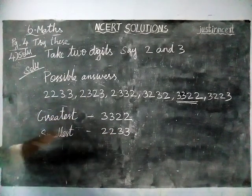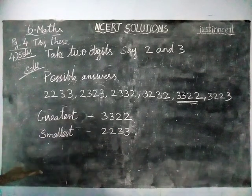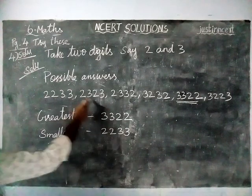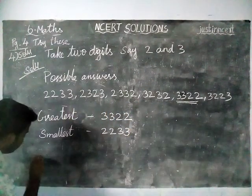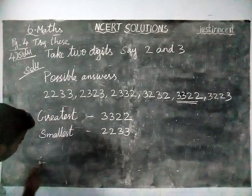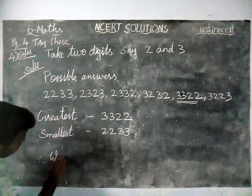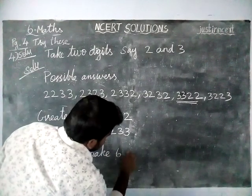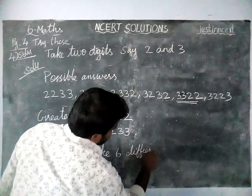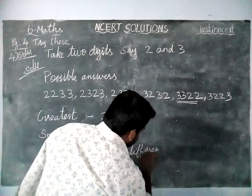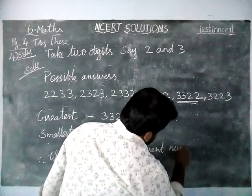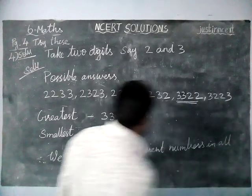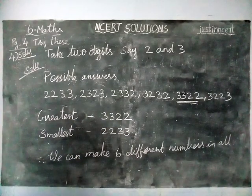So the greatest number and smallest number we have found. They are also asking how many different numbers can you make in all — so we can make 1, 2, 3, 4, 5, 6 numbers. Therefore, we can make 6 different numbers in all. Thank you, students.